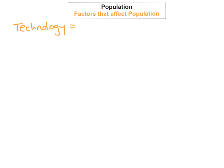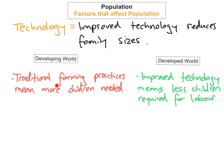The next factor is technology. Technology affects population because in more developed countries, the more improved the technology within the country, usually the less reliance they need on large families, so the population growth is smaller. In poorer countries that are not as technologically advanced, they usually have larger families, increasing the population, because they need the children to work on the farms. In developing worlds, traditional farming is practiced quite frequently and that means they need more children.